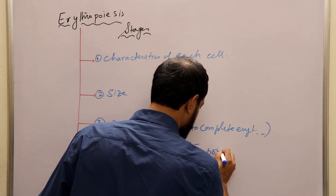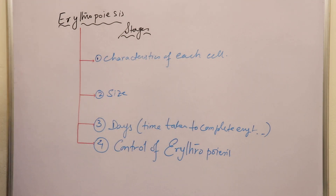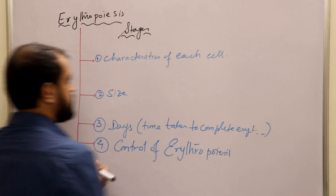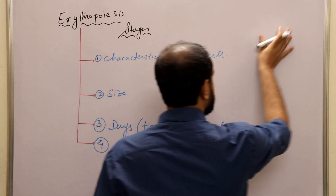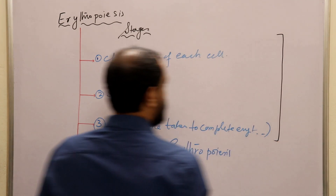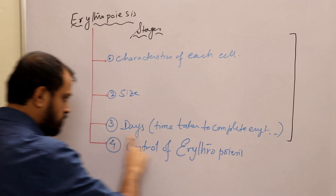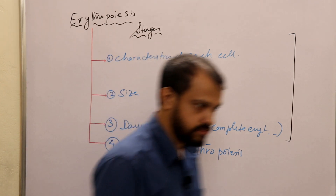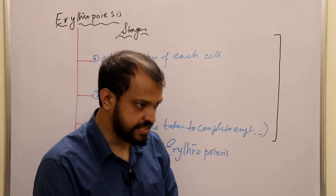We will first discuss these three things — characteristics, size, and time. Then after that, we will come to the special portion: control of erythropoiesis, that is the role of erythropoietin — the hormone secreted by the peritubular capillary bed of the kidney.